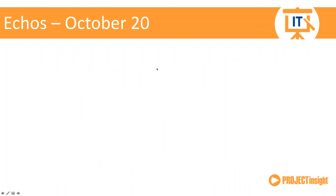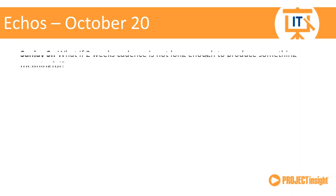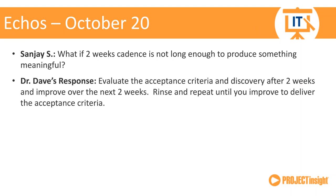We always begin the webinar by answering questions from the previous event. The last session was October 20th, and this will be the final agile webinar for 2016 — we'll begin again in 2017. Sanjay wanted to know: what if a two-week cadence is not long enough to produce something meaningful? I think it's really simple — we continue to look at the acceptance criteria and do some discovery after our two-week sprints to see how we could improve. Everything is incremental, so there shouldn't be an expectation of having all the answers at once.